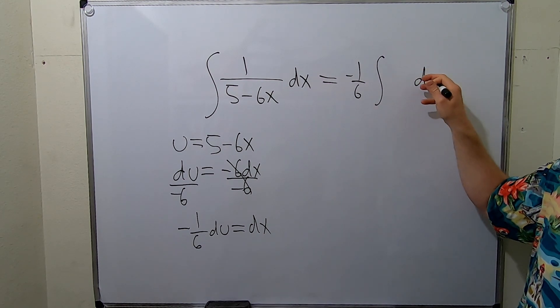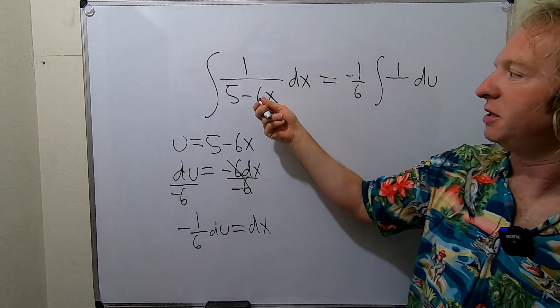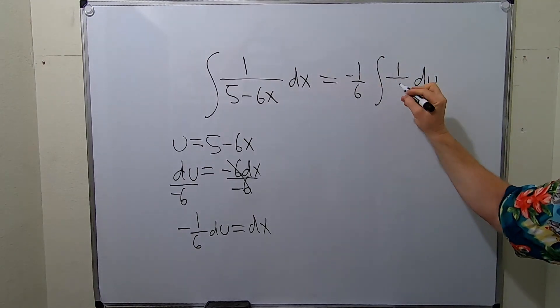So we have this, we still have the 1, and then this piece here, this piece is just your u, so you get u.